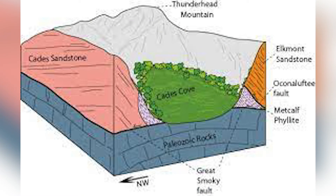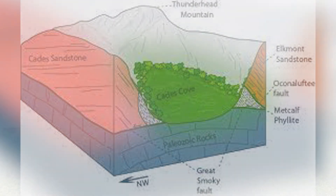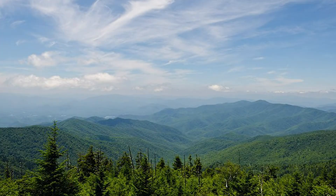Odd things happen when these huge accumulations of earth's crust clash. An example of this is Cades Cove in the Great Smoky Mountains National Park — the limestone floor of Cades Cove is younger than the rocks that are now on top of the cove in the mountains above. This happens because of the tumultuous journey these pieces of crust can take; they sometimes flip over one another, creating Cades Cove as they did.